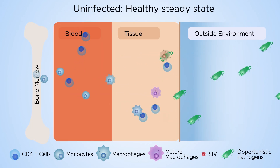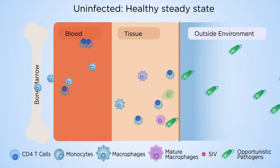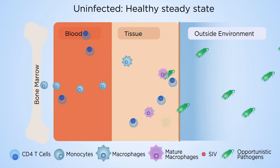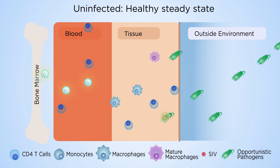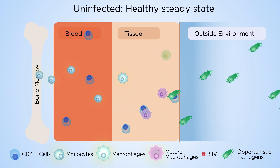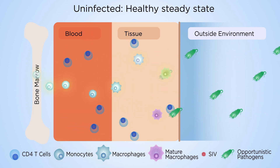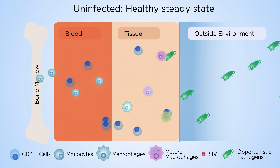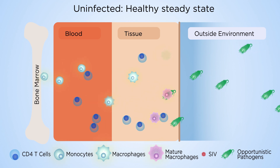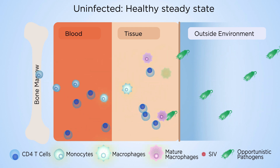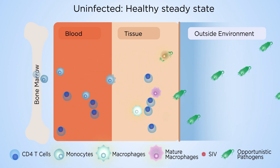During steady state, cells from the bone marrow enter the blood. Among these are monocytes that constantly move from blood to tissue, differentiate into macrophages, and destroy potential pathogens.